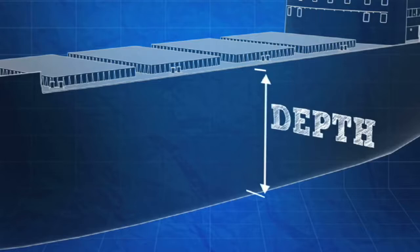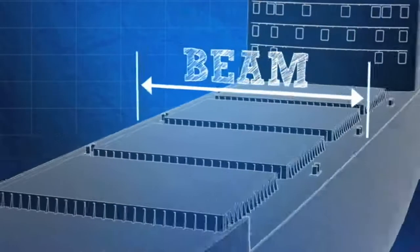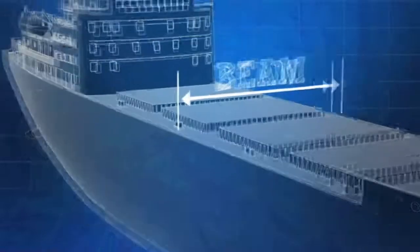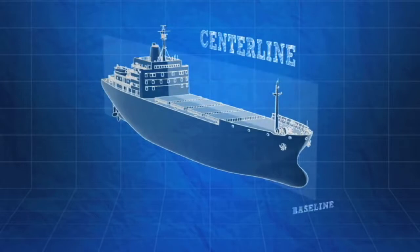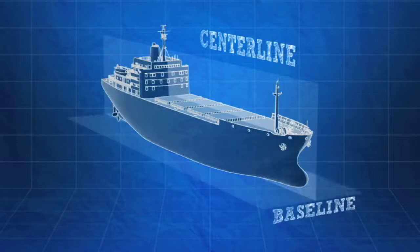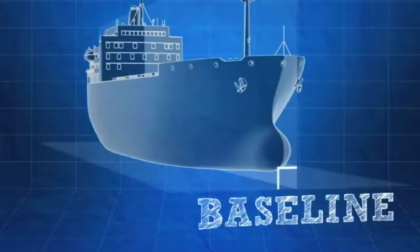Depth is the height of a hull from the highest point of its main deck to its lowest point. A ship's beam, or breadth, is its width at its widest point. The centerline is a vertical plane that runs the length of the ship at the midpoint of its beam, and the baseline is a horizontal plane perpendicular to the centerline, located at the lowest point of the hull.